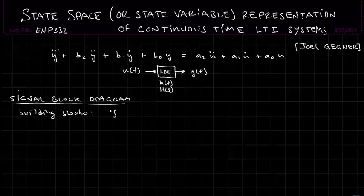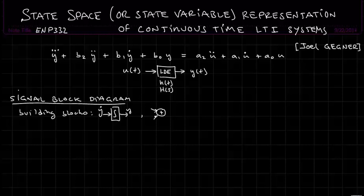The building blocks are as follows. We'll have an integrator block such that if you have y coming out, then y dot went in — the anti-derivative of the derivative of y is y. We'll have summing blocks, where we can have one or more inputs with a plus or minus sign and one output. And we'll have scaling blocks, where we might have some constant k.